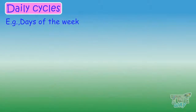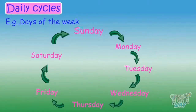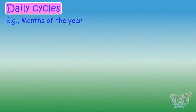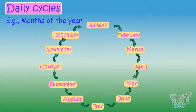Days of the week. We have days of the week, Sunday to Saturday, and then again Sunday. So it's also a cycle. Months of the year. We have months of the year, January to December, and then again January. So it's also a cycle.